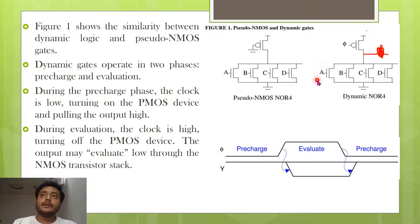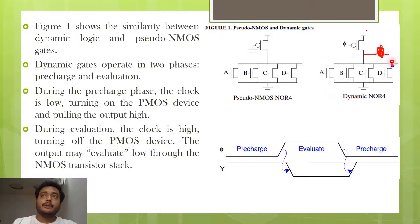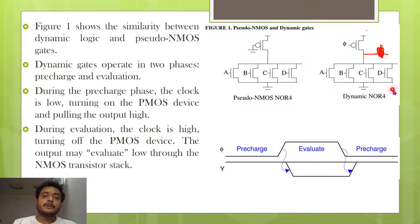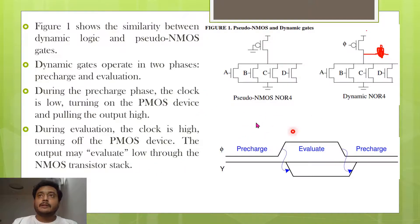If any input goes high — for example A equals one — a path exists to ground and the pre-charged VDD output is discharged, making output low. So the circuit first pre-charges the output node to VDD, then depending on the input combination: if the expression evaluates to one the output stays high; if it evaluates to zero the node discharges to zero. That is the pre-charge and evaluate mechanism.